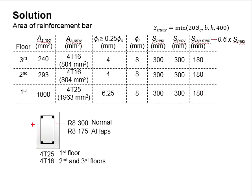In conclusion, for the size of 300 times 400 column, 4T25 is provided at the first floor and 4T16 is provided for the second and third floor. As for the link, R8-300 is provided in the column. However, for the lapping regions and for the regions of the H, which is 400 on top of the beam and below of the beam, R8-175 is provided.